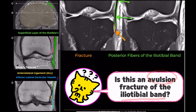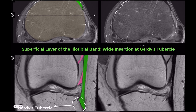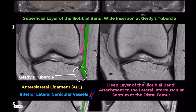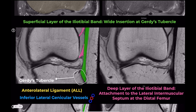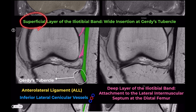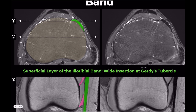Let's briefly review the anatomy of the iliotibial band. It is a thick fascial band running along the lateral aspect of the thigh. The iliotibial band consists of two main layers with distinct distal insertions. The superficial layer, highlighted in green, is the primary tendinous component and inserts onto Gerdy's tubercle on the anterolateral tibia.